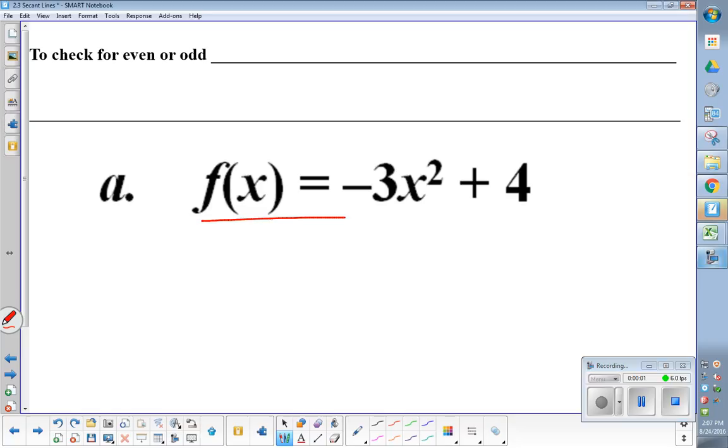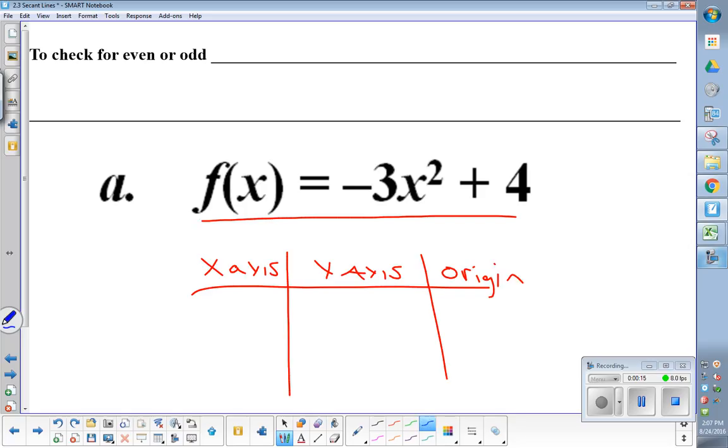If you remember, if we're looking at this equation, I can look at the type of symmetry. If you remember before, we made this cool little chart where it was like x-axis, y-axis, and origin. Don't write this down. And to do x-axis, we plugged in a negative y. So we said like negative y equals negative 3x squared plus 4, and we changed all the signs and so on. You remember doing that?